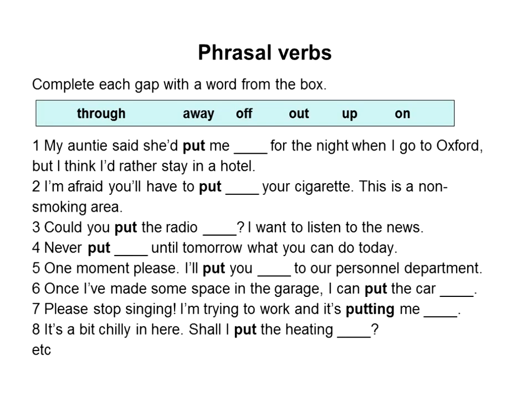Here's also a very common coursebook exercise: just fill the gap with the correct particle — throw, away, off, out, and so on. For example, 'My auntie said she put me ___ for the night when I go to Oxford, but I think I'd rather stay in a hotel.' The answer is 'up,' but it's guesswork. If you don't know the phrasal verb, how are you going to know which particle to put in? Fine as a testing exercise, but as a teaching exercise it doesn't teach — it perpetuates the chaos.